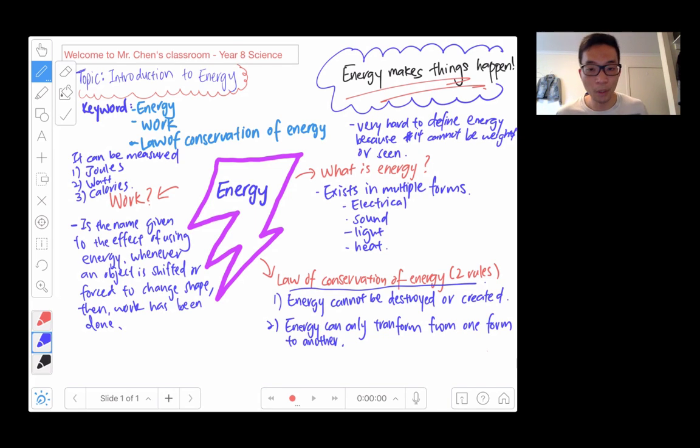So to sum up today's video, we looked at three keywords: energy, work, and law of conservation of energy. Energy cannot be weighed or seen but it can be measured. It's very hard to define energy but it comes in different multiple forms such as electrical, sound, light, heat. And remember the two rules in law of conservation of energy: energy cannot be created or destroyed, and energy can only transform from one point to another. That's it for today and we will see you in the next lesson. See you, bye. Peace out.